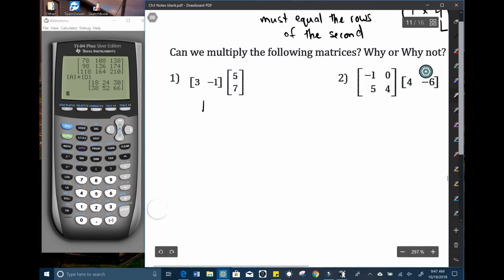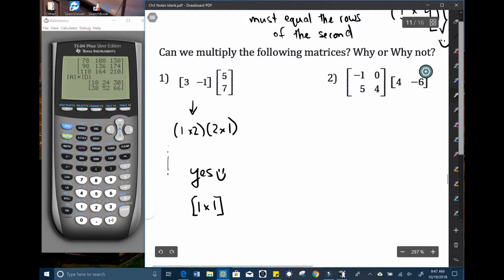Again, if we write the dimensions out of this first matrix, this is a one row, two column. This is a two row, one column. What do you think? Can we multiply it? If you wrote yes, you are correct. More specifically, you're just going to get a one by one matrix out of it.